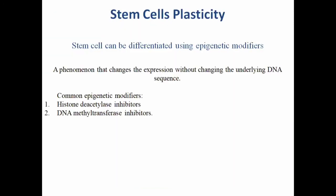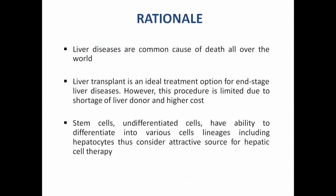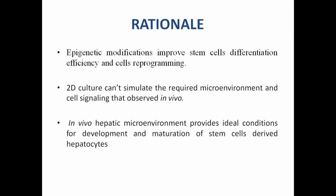Stem cells can be differentiated using epigenetic modifiers. Histone modification is one of the key epigenetic regulations that plays an important role in stem cell differentiation. The rationale of this study is that liver diseases are a common cause of death all over the world. Liver transplant is an ideal treatment option for end-stage liver diseases but is limited due to many factors. Stem cells have the ability to differentiate into various lineages including hepatocytes, and are thus considered an attractive source for hepatic cell therapy. Epigenetic modifications improve stem cell differentiation efficiency and cell reprogramming. However, 2D culture cannot simulate the required microenvironment and cell signaling observed in vivo, whereas the hepatic microenvironment provides ideal conditions for development and maturation of stem cell-derived hepatocytes.